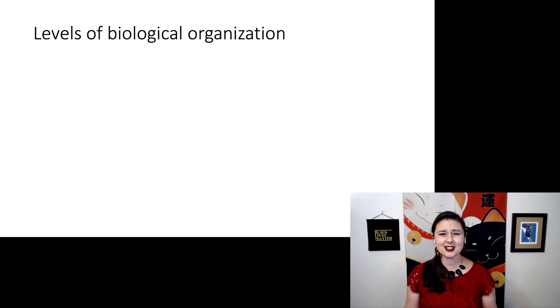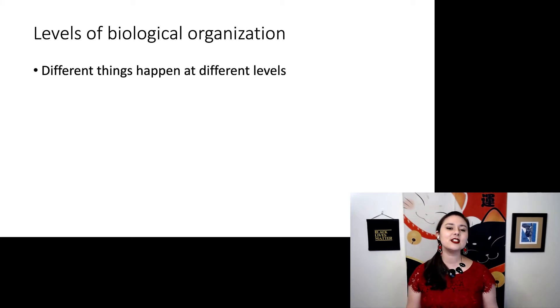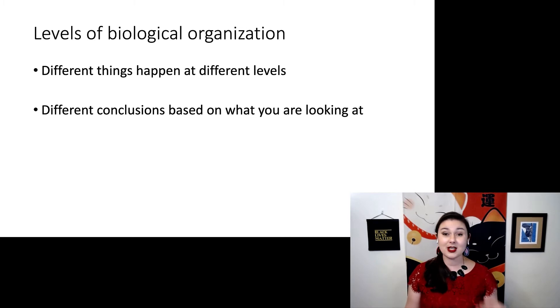But why does this matter? Why do we care about these different levels of biological organization? These are important because different things happen at different levels. And different scientists will draw different conclusions because they're looking at different types of data. There are some really interesting debates within evolutionary biology. And in my opinion, some of them are due to the fact that people are looking at different things and looking at different levels of biological organization. And that will cause different people to think things are of differing importance.